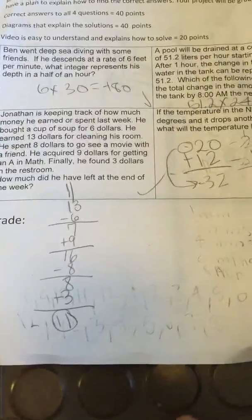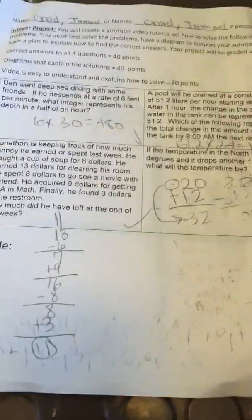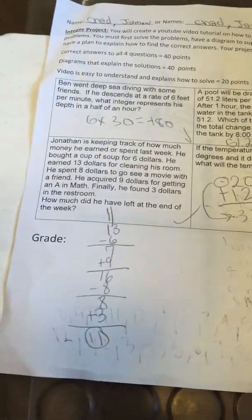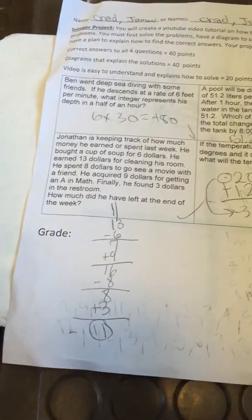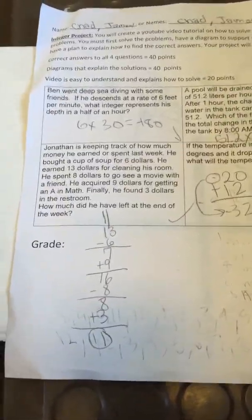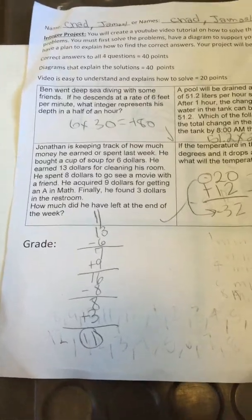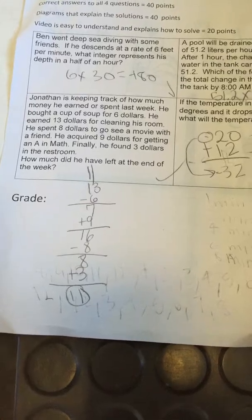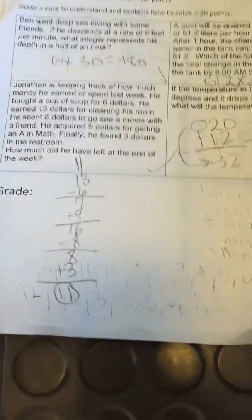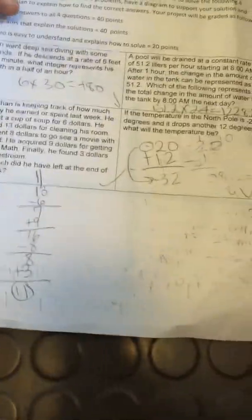The next problem is Jonathan is keeping track of how much money he earned or spent last week. He bought a cup of soup for $6. He earned $13 for cutting hedges. He spent $8 to go see a movie with a friend. He acquired $9 for getting an A in math. And finally, he found $3 in the restroom. How much did he have left at the end of the week?